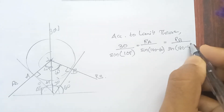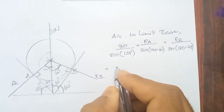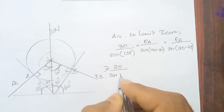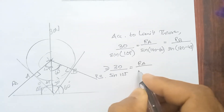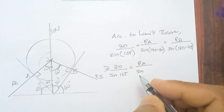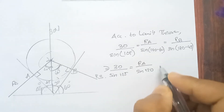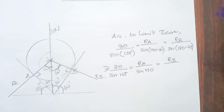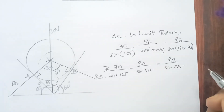Sin 120 is equal to R_B divided by sin of 180 minus 45, which is 135 degrees — so sin 135.